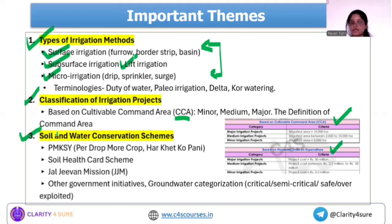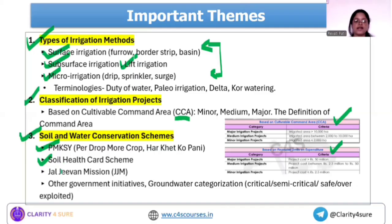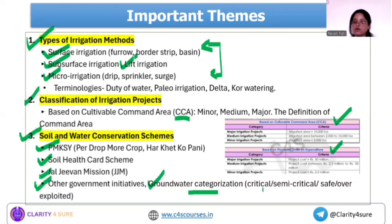Then soil and water conservation schemes: Pradhan Mantri Krishi Sinchayee Yojana and its components, soil health card scheme, and Jal Jeevan Mission. Other government initiatives include groundwater categorization of blocks and districts — classification into critical, semi-critical, safe, and over-exploited. A question asked the percentage of groundwater exploited under semi-critical category — the answer was 70 to 80 percent.